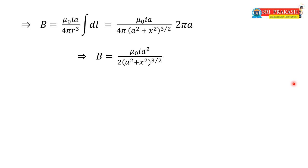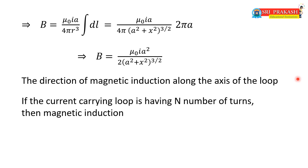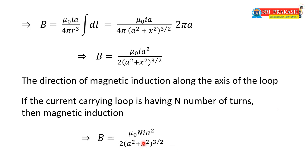The direction of magnetic induction is along the axis of the loop, so this current-carrying coil acts like a bar magnet. For n number of turns, the magnetic induction is multiplied by n: B = μ₀·n·I·a² / [2·(a² + x²)^(3/2)]. This is the magnetic induction due to a current-carrying coil with n turns at an axial point distance x from the center.